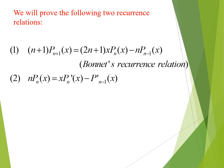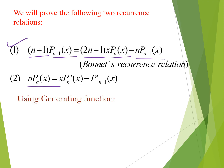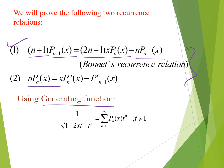To prove the first recurrence relation, (n+1) P_{n+1}(x) = (2n+1) x P_n(x) minus n P_{n-1}(x), we require the generating function of Legendre polynomials: 1 / sqrt(1 - 2xt + t²) = summation from n=0 to infinity of P_n(x) t^n, where t ≠ 1.